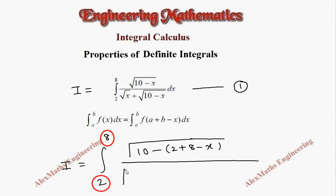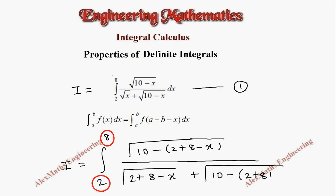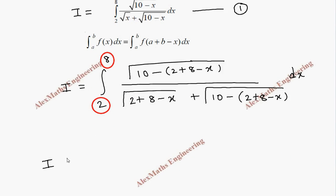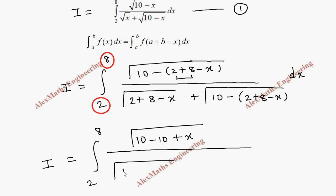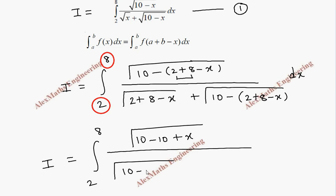So we get integral 2 to 8 of root(10 minus (2 plus 8 minus x)) divided by root(2 plus 8 minus x) plus root(10 minus (2 plus 8 minus x)) dx. Simplifying: 2 plus 8 is 10, so 10 minus 10 plus x becomes root(x) in the numerator, and the denominator terms become root(10 minus x) plus root(x).